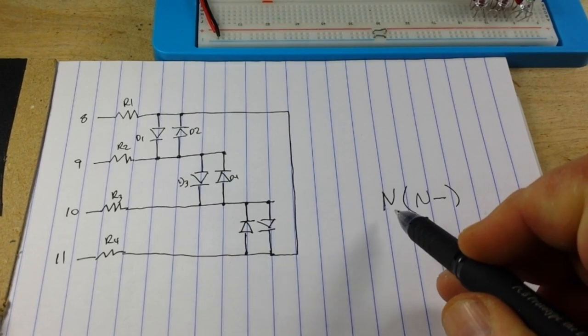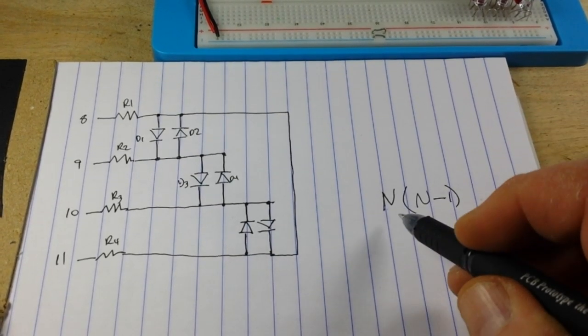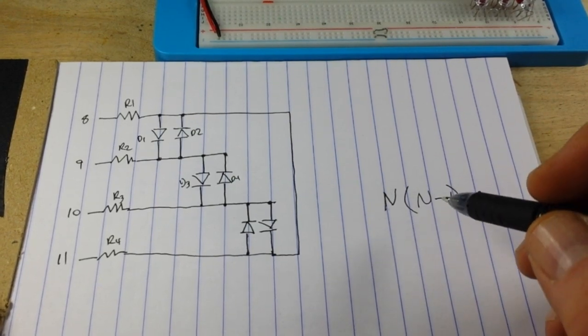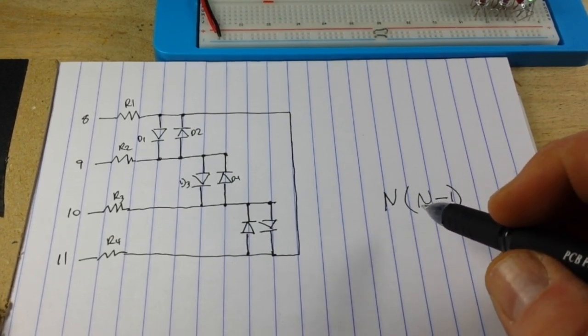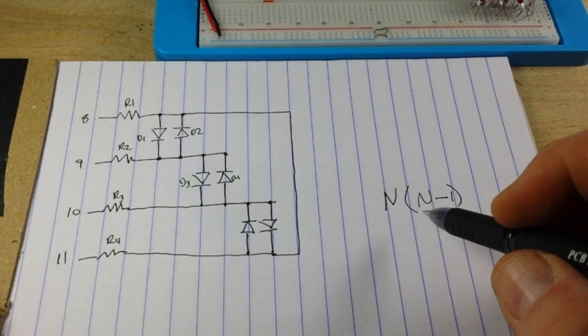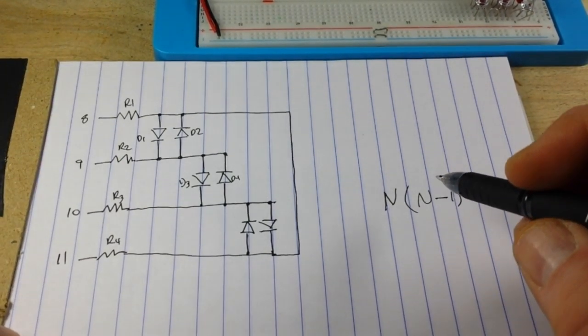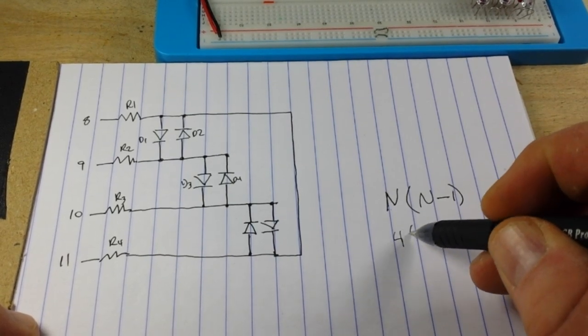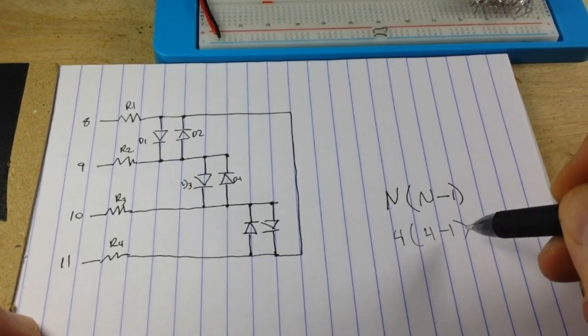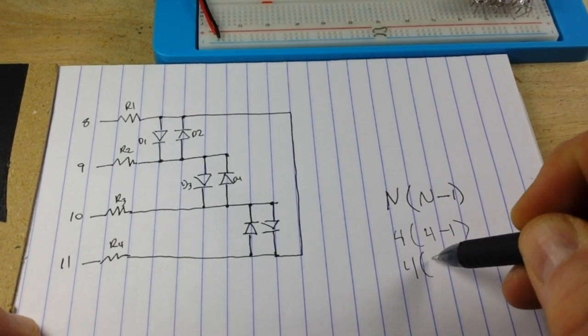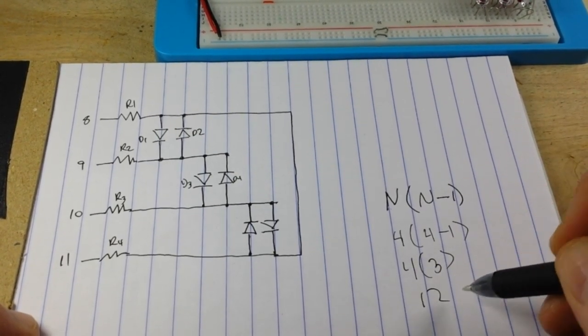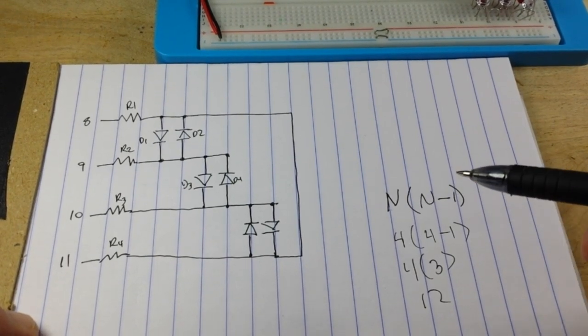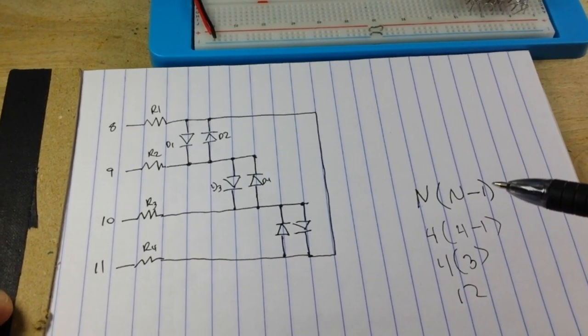But the formula for figuring out how many LEDs you can control is N times N minus 1. So in this case, we have four resistors, four inputs. So it's four times four minus one, or four times three, or twelve. Now I'm only doing six just to keep things simple here. But I'll explain to you how you can do the whole twelve.